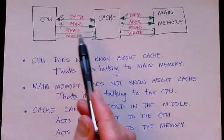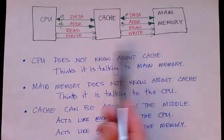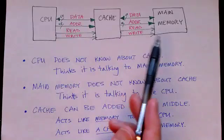The CPU doesn't know whether it's communicating with the cache or with the main memory. You might imagine that it thinks it's talking to the main memory directly.